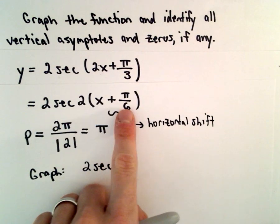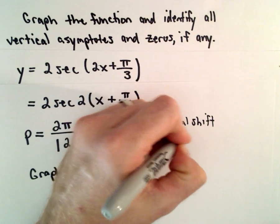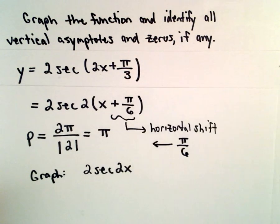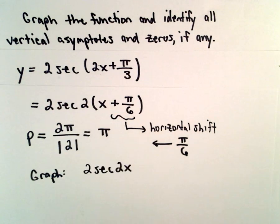We've got a positive pi over 6. It's going to shift everything to the left by pi over 6 units. So I'm going to graph 2 times secant of 2x, and then I'm going to shift everything left, and that will give us the graph of the original function here.